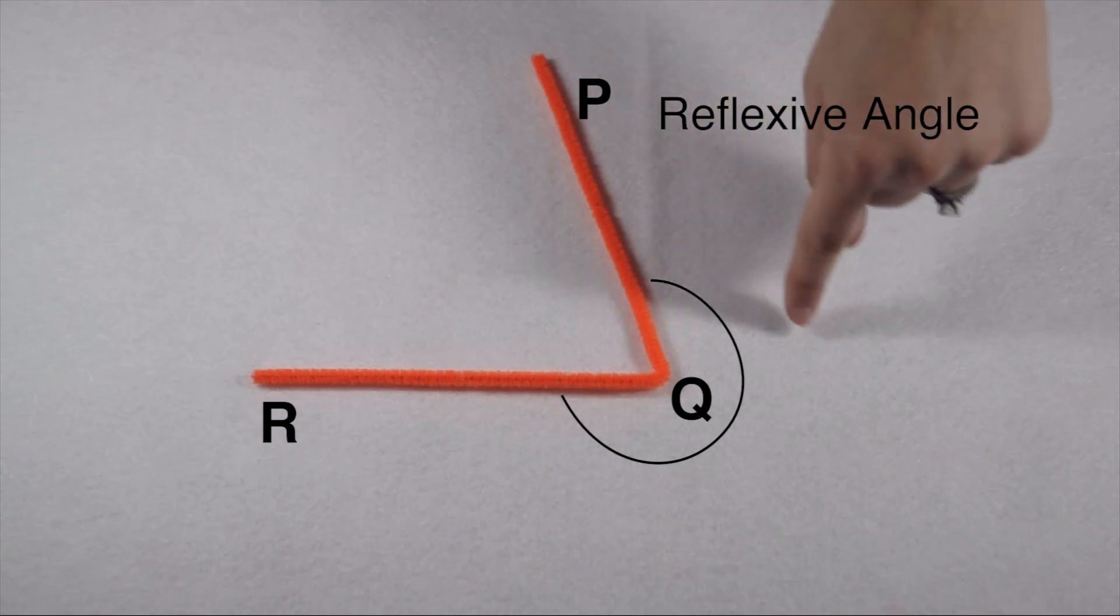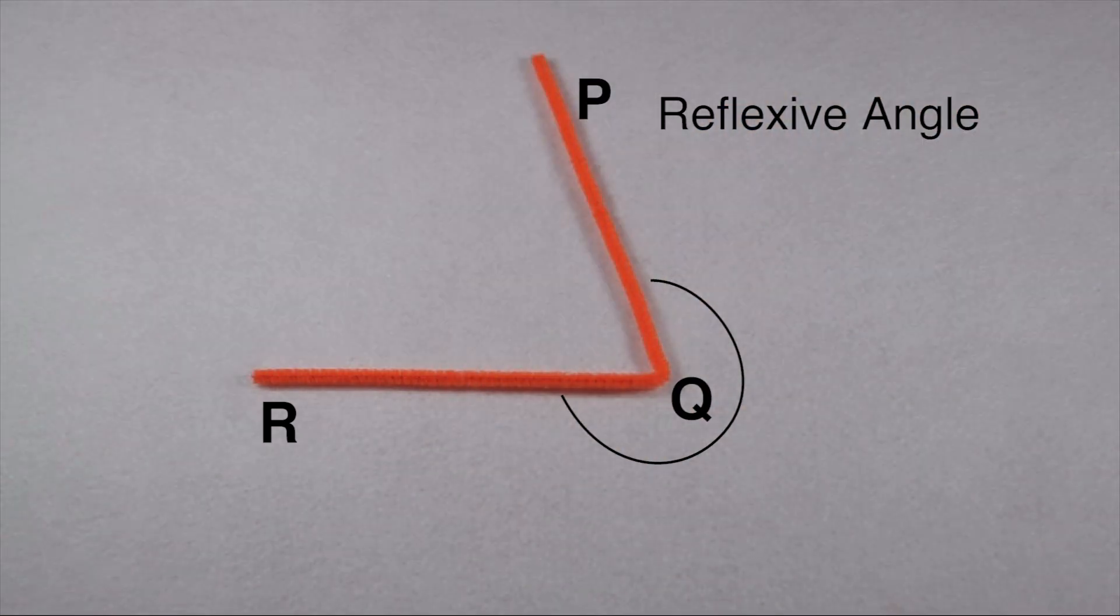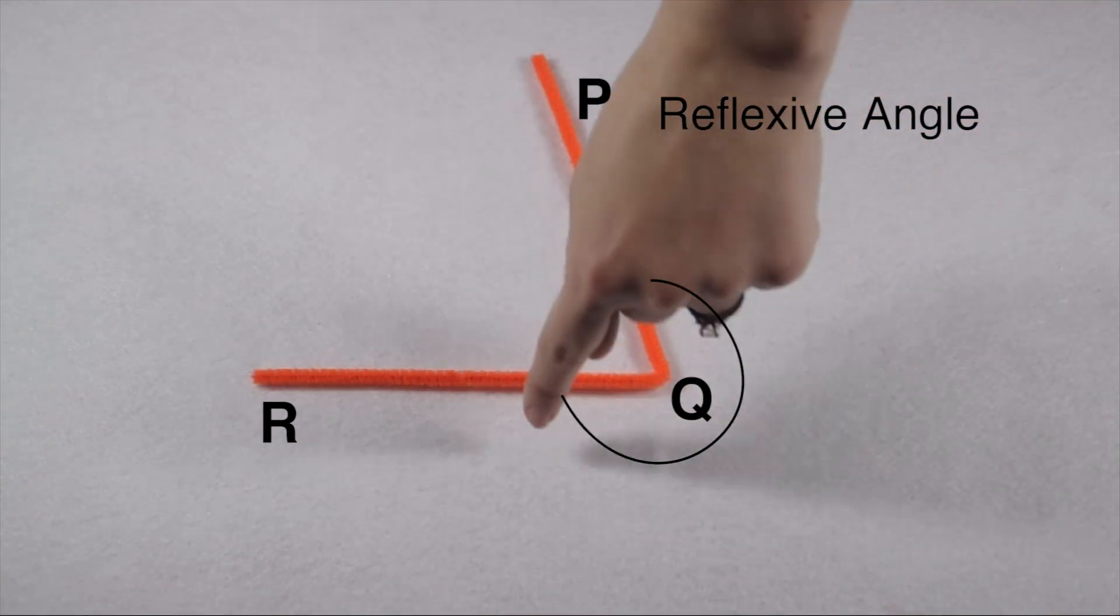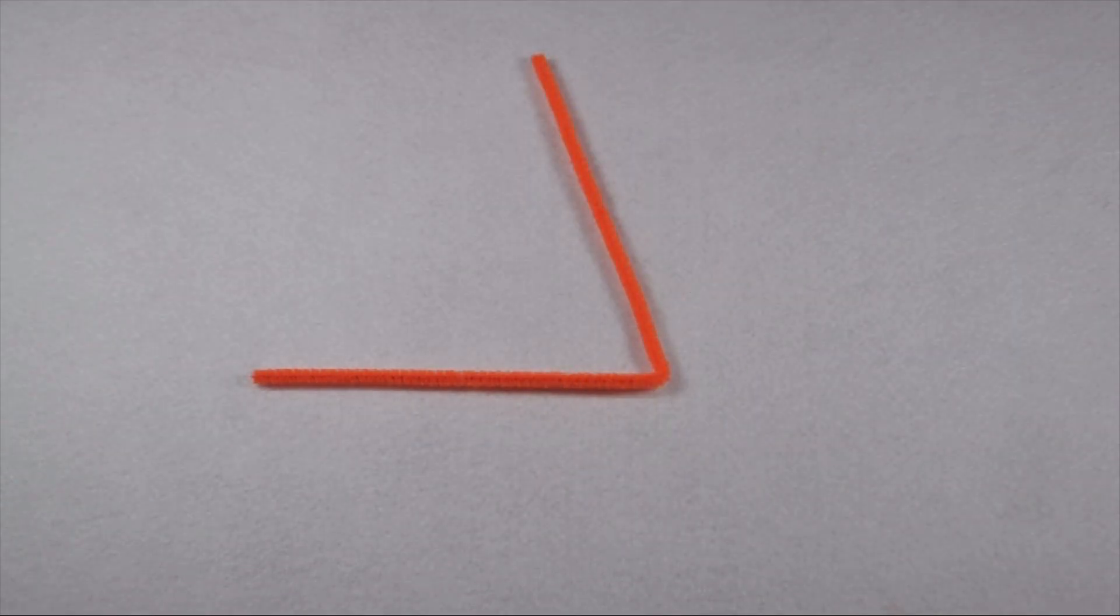Reflex angles measure between 180 and 360 degrees. The best way to identify them is to look for their label on the outside edge. Now that we know about the different types of angles, we can move on to drawing and measuring them.